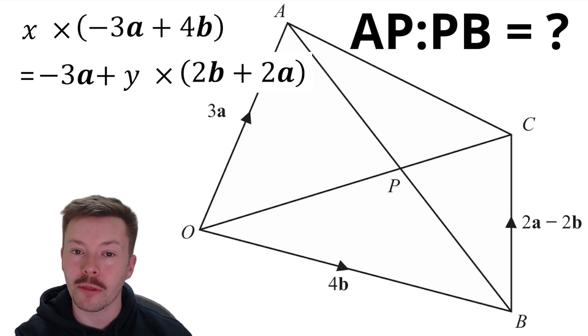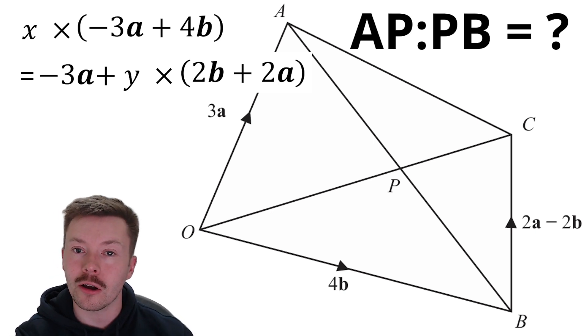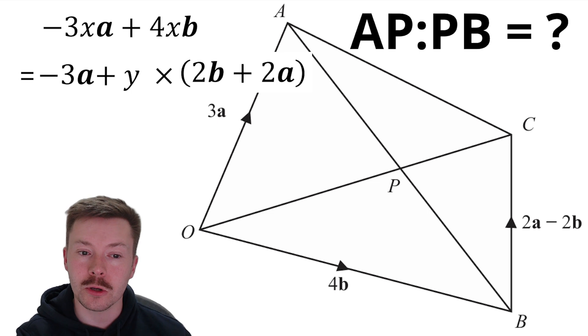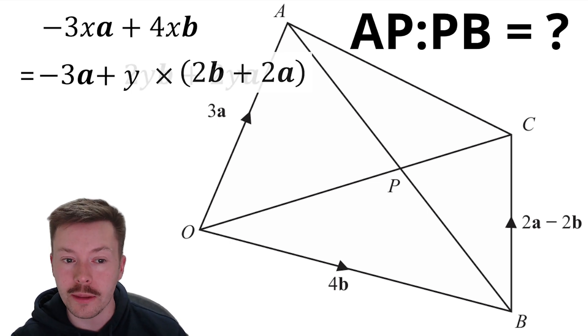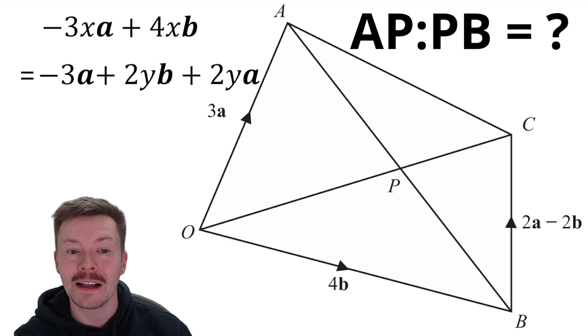Okay, we can then simplify that 4B plus 2A minus 2B to 2B plus 2A. And then on the top, we can multiply the X in to give us minus 3XA plus 4XB. And then on the bottom, we can multiply the Y through to give us 2YB plus 2YA.